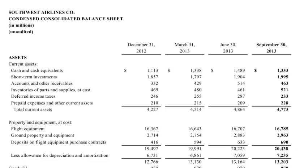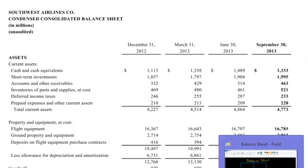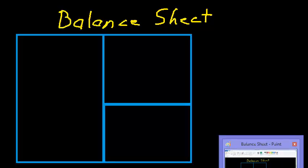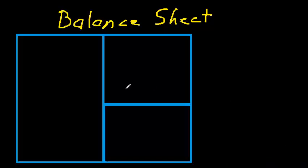Now before we dig into Southwest's balance sheet, I want to do a quick introduction of balance sheets so that we're all working off the same base of knowledge. I have a balance sheet layout here and I'm going to use an example that I often see used, which works pretty well I think, and that's the example of home ownership.